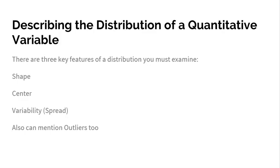When you describe the distribution of a quantitative variable, there are three key features of that distribution you have to examine. Distribution is what values your variable takes on and how often it takes on those values. To describe that in the most detail, you need to mention the shape of your distribution, the center of your distribution, and the variability or spread of your distribution. A fourth item is outliers as well. The main three are shape, center, and variability.